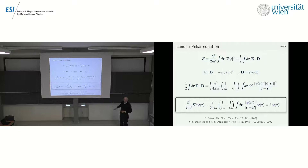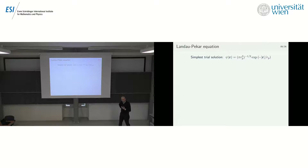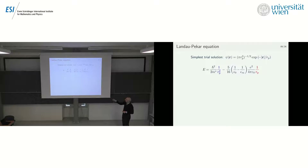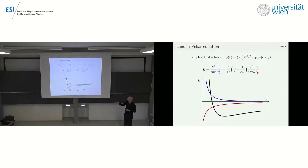With a simple exponentially decaying trial function, the energy becomes a sum of two terms: one scaling as the inverse square of the polaron radius with a plus sign (kinetic energy), and another scaling as the inverse of the polaron radius with a minus sign (Coulomb energy). Due to their different scaling and opposite signs, there is a competition between the Coulomb and kinetic parts, leading to the formation of an energy minimum — this is what we call a self-trapped polaron.